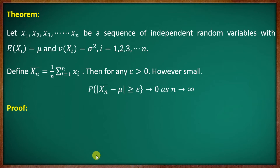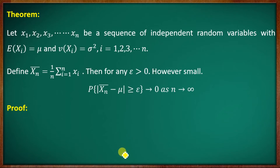Then for any epsilon greater than 0, however small, the probability that |x-bar-n minus mu| is greater than or equal to epsilon tends to 0 as n tends to infinity.